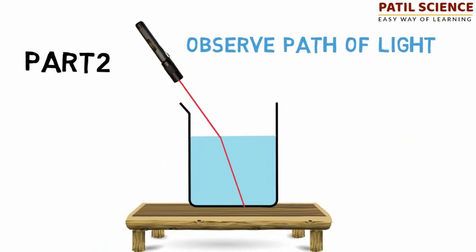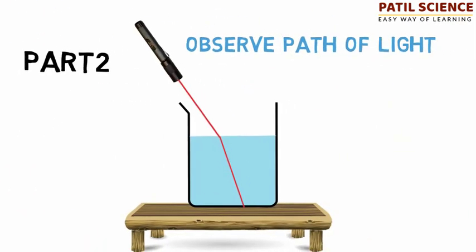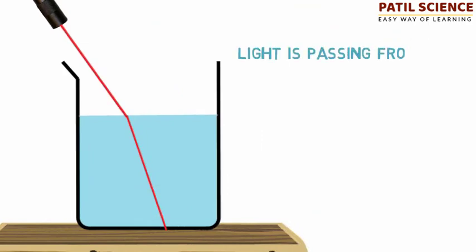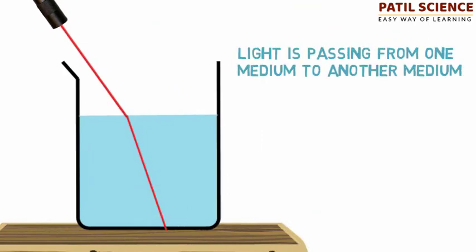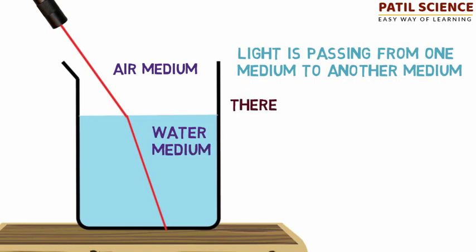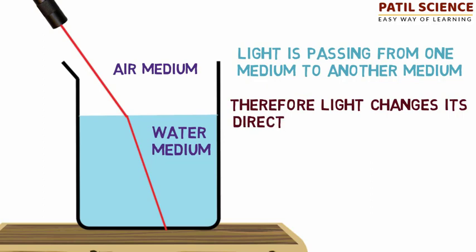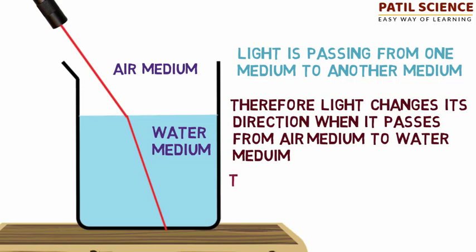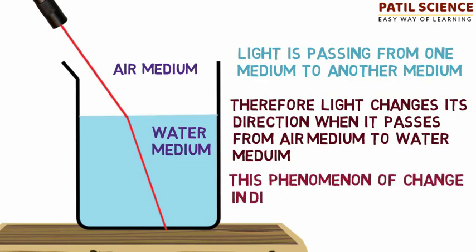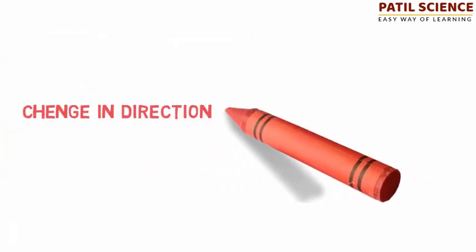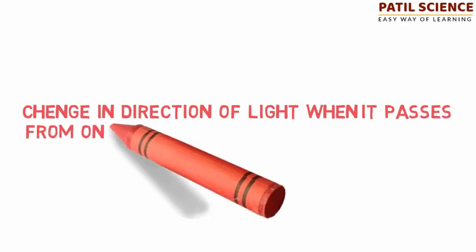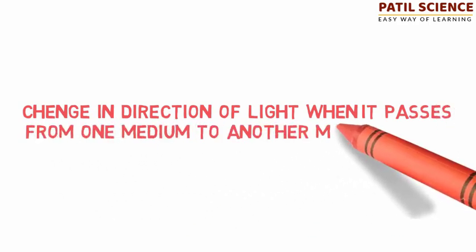Whereas in part two, light is passing from one medium to another medium, i.e. from air medium to water medium. Therefore, light changes its direction when it passes from air medium to water medium. This phenomenon of change in direction of light is called refraction. Change in direction of light when it passes from one medium to another medium is called refraction of light.